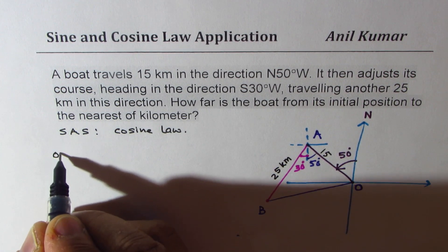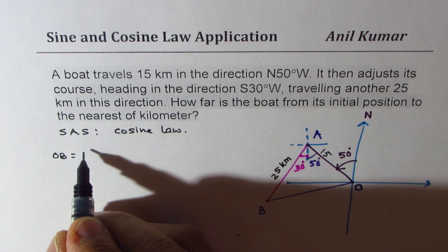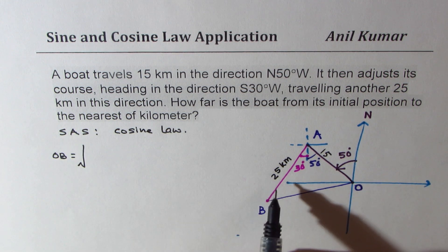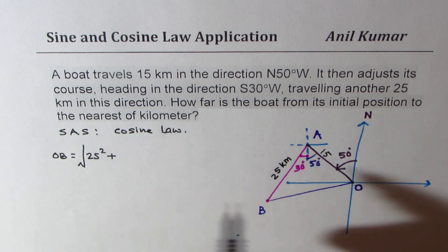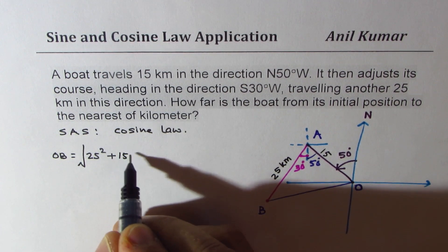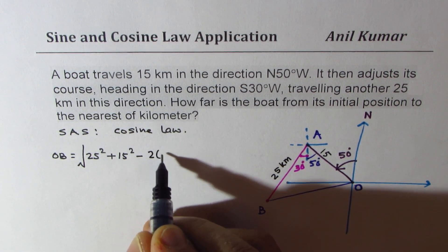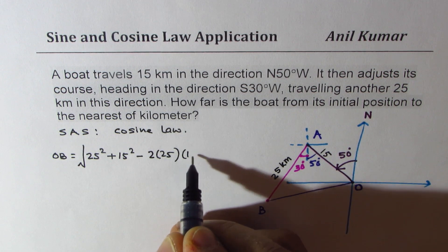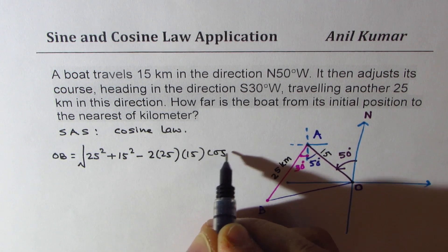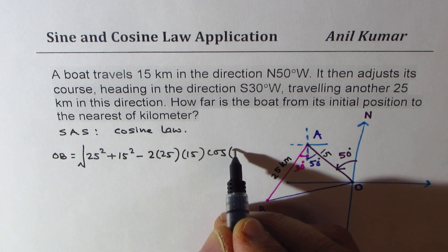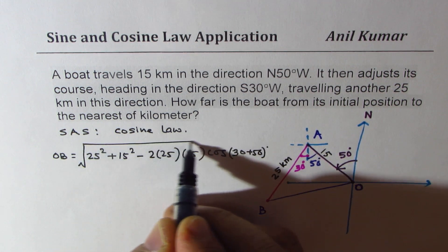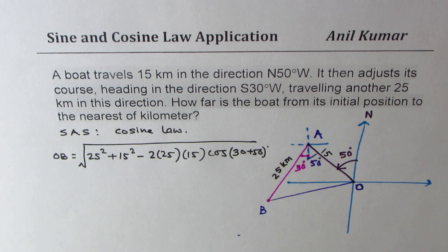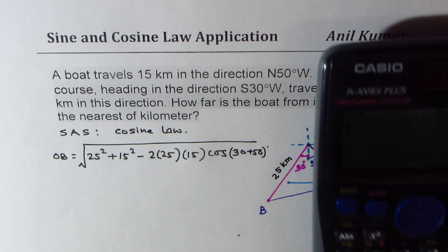Distance OB can be written as square root of 25 square plus 15 square minus 2 times 25 times 15 times cos of angle. So we'll write 30 plus 50. Here we have to find the angle in between, which is 30 plus 50 degrees. That's it. You can use calculator to find this value.